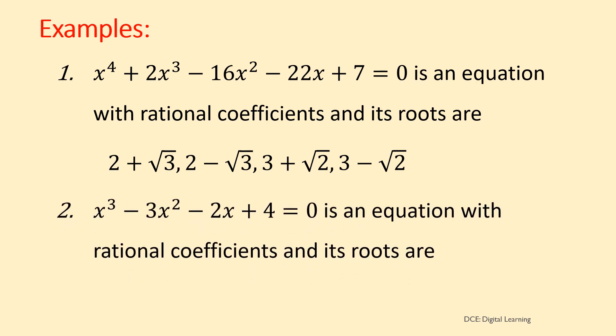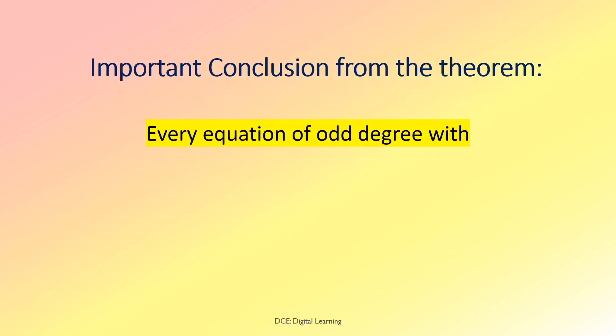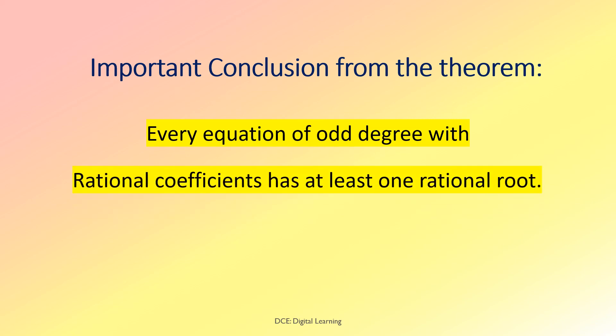Example 2: x³−3x²−2x+4=0 is an equation with rational coefficients and its roots are 1, 1+√5, 1−√5. Clearly, irrational roots occur in conjugate pairs. Important conclusion from the theorem: every equation of odd degree with rational coefficients has at least one rational root.